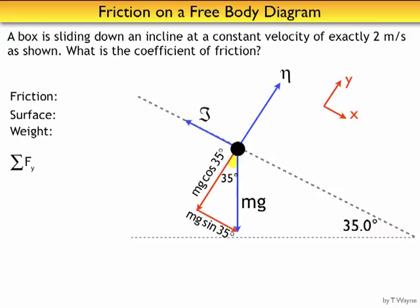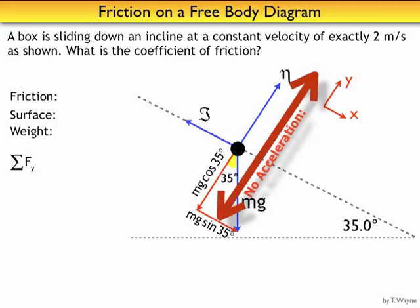So on to the next step, summing up the forces. I'll start by summing up the forces in the y direction. In the y direction, that is perpendicular to the incline, there's no acceleration. In other words, this box isn't jumping off the incline or sinking down into the incline and speeding up in the process. Because there's no acceleration, it's all equal to zero.